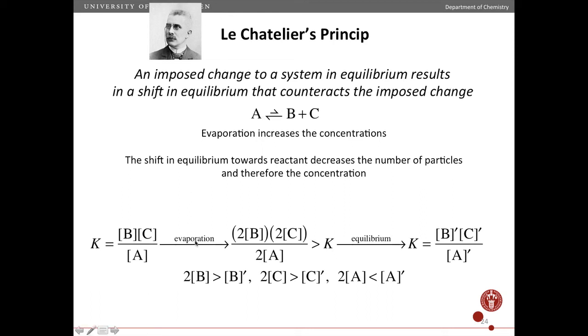A more quantitative way is down here. So you have your expression for the equilibrium constant. Half the solvent evaporates, so your concentrations double. And because you have two product molecules and one reactant molecule, that means that the equilibrium constant, or this ratio, is now too large compared to the equilibrium constant. You're out of equilibrium.